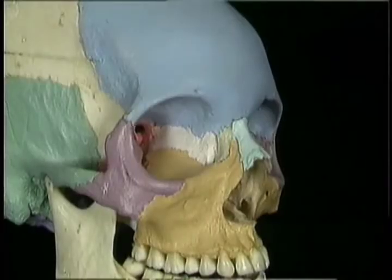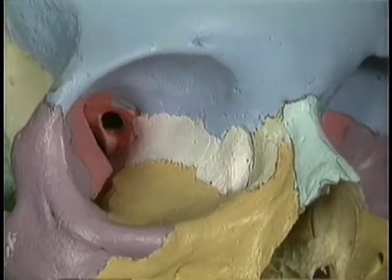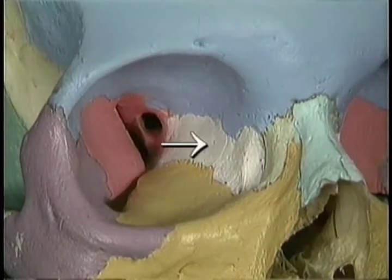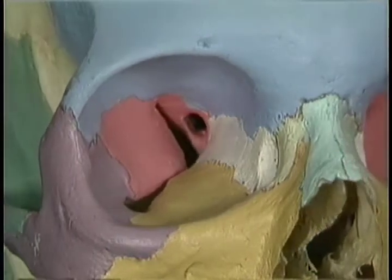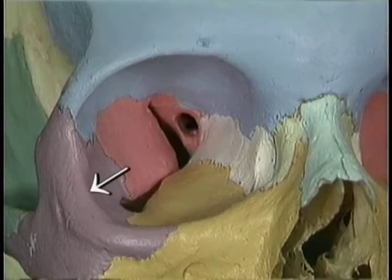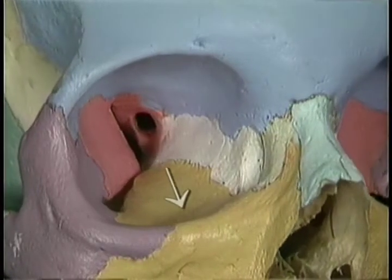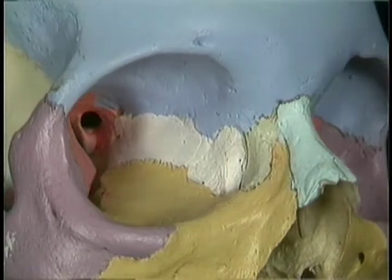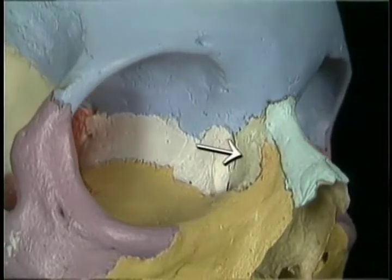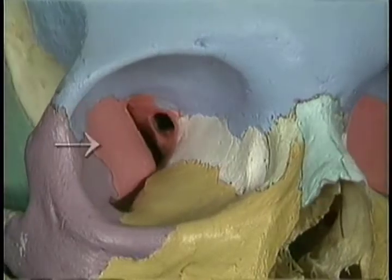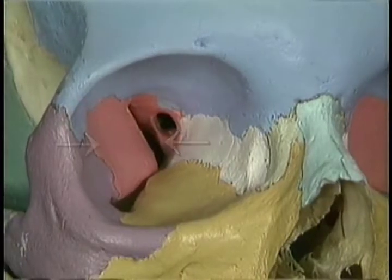As we saw in tape 4, several bones are involved in forming the orbit. Starting medially, this is part of the ethmoid bone. This is the underside of the frontal bone. This is the zygomatic bone. This is part of the maxilla, and this is the lacrimal bone. Back here are the greater and lesser wings of the sphenoid bone.